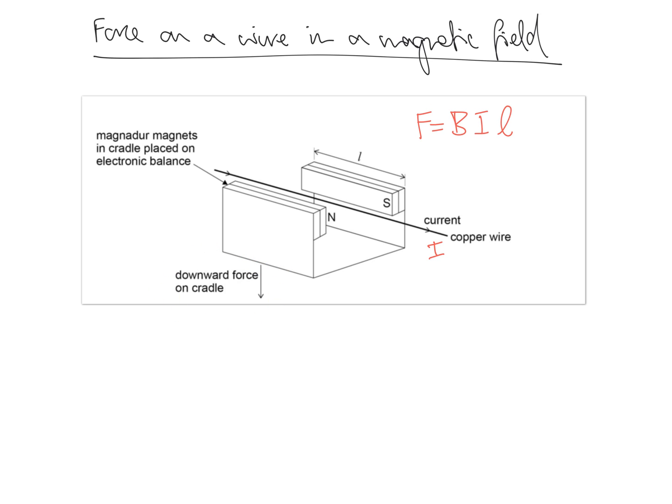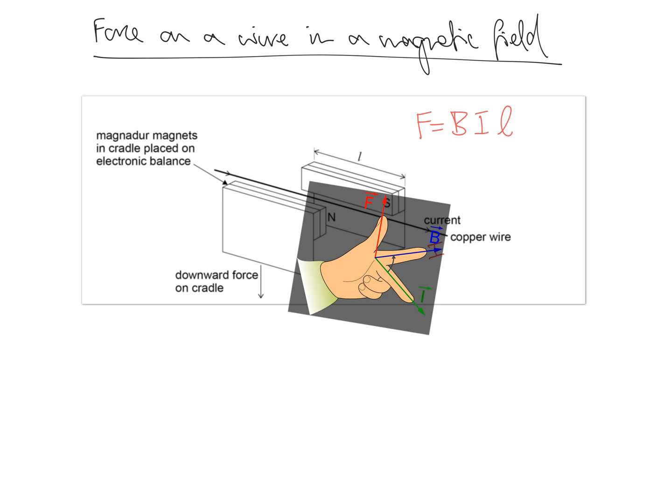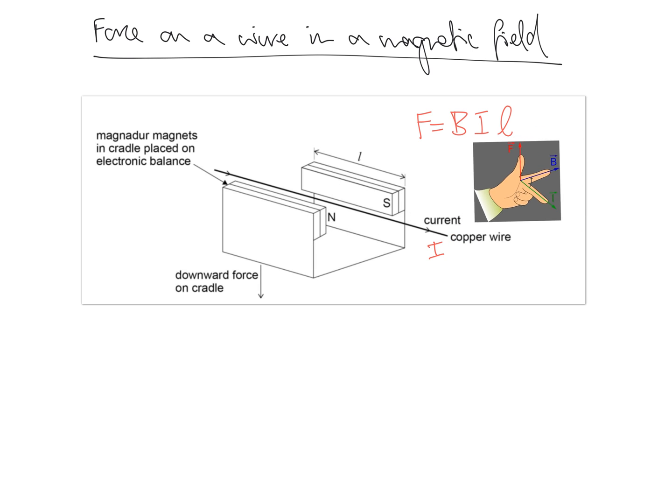If you can recall, the left-hand rule, I'll shrink that right down, indicates the direction of the magnetic field. So, the thumb is the thrust, the first finger is the field, and the second finger is the current, and it's the left-hand rule because we're looking at the direction of force.